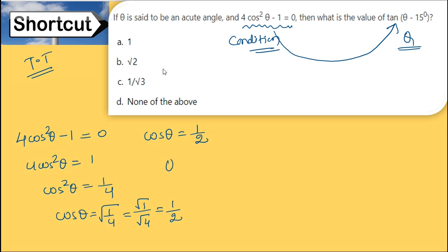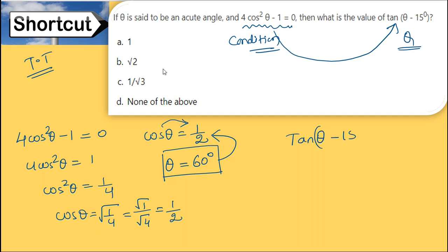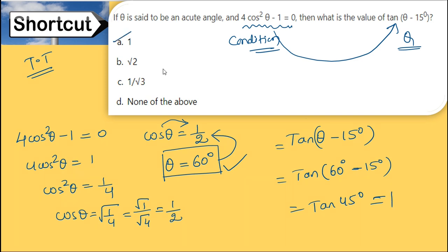Since cos θ = 1/2, θ = 60°. The question asks for tan(θ - 15°). Substituting θ = 60°: tan(60° - 15°) = tan 45° = 1. So option A is the answer.